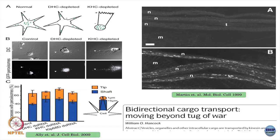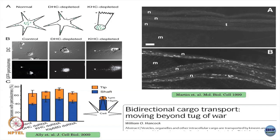In fact, other experiments show that if you inactivate any one type of motor, the cargo as a whole stops moving — instead of zooming across to the other end it stops moving entirely — which says there is some sort of regulation of each motor by the other. You need both in order to see motion inside cells. If you inactivate one type, all motion inside the cell can stop.